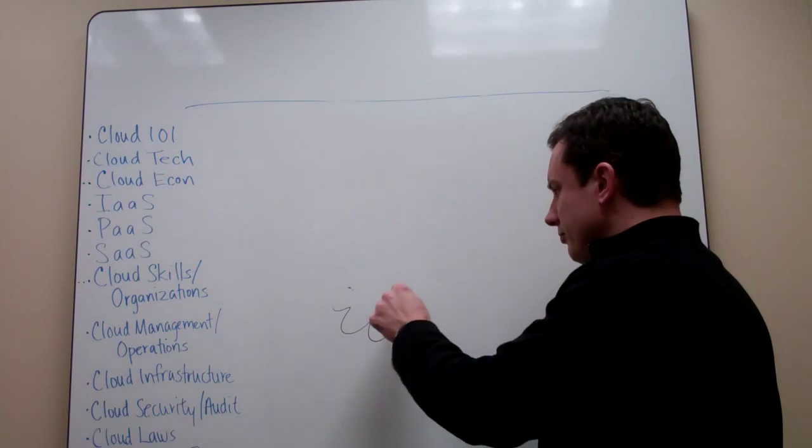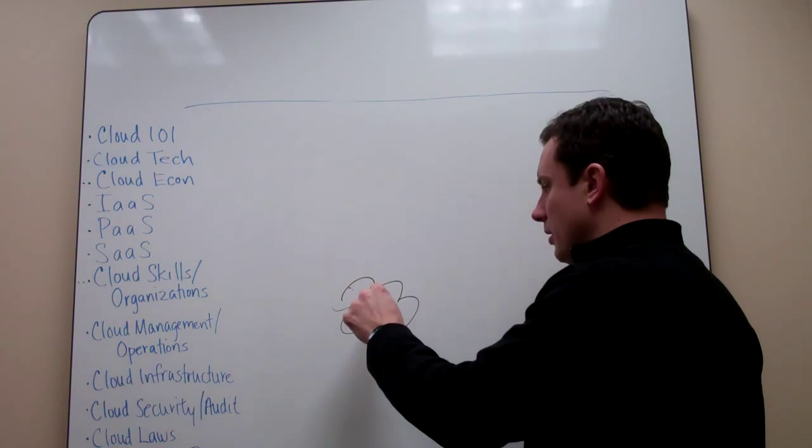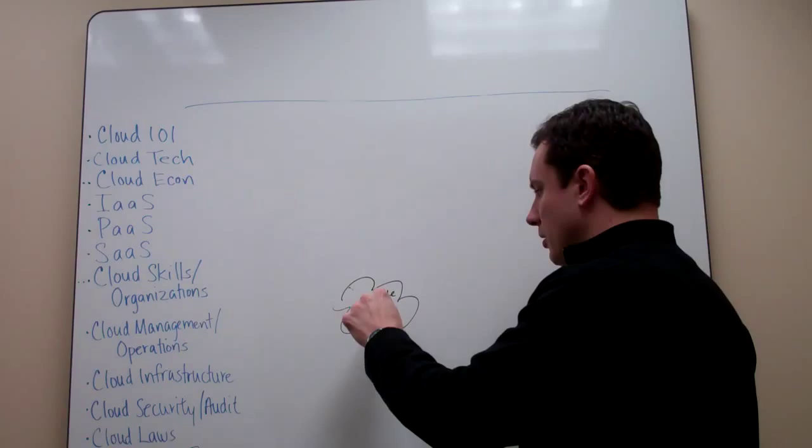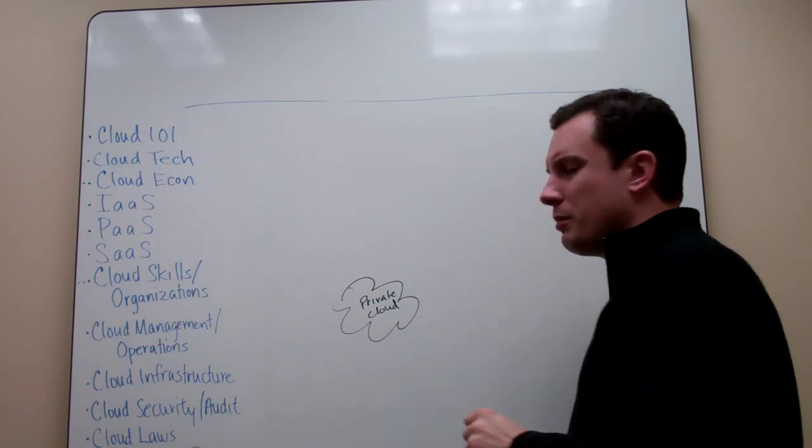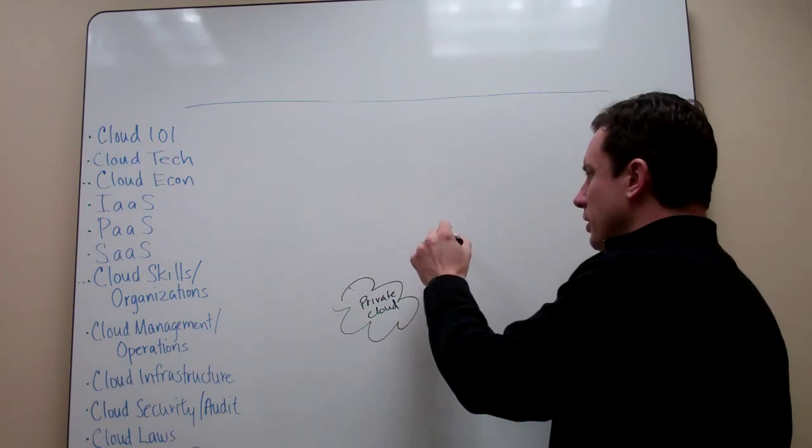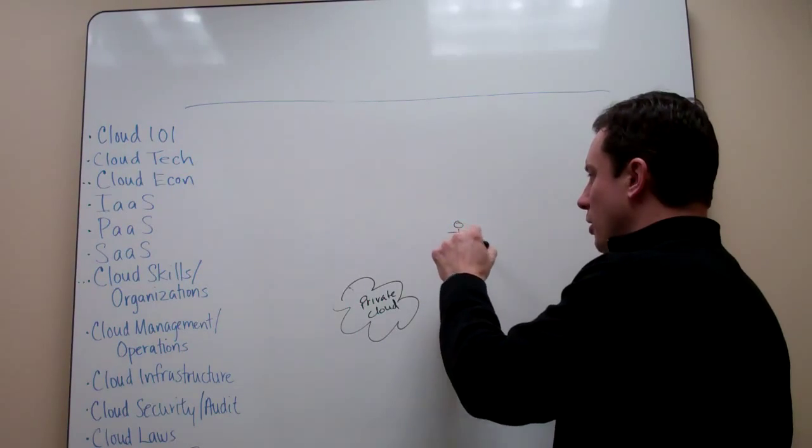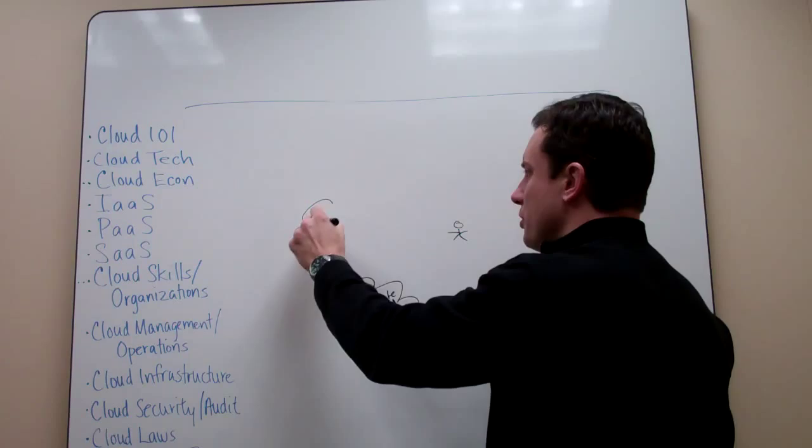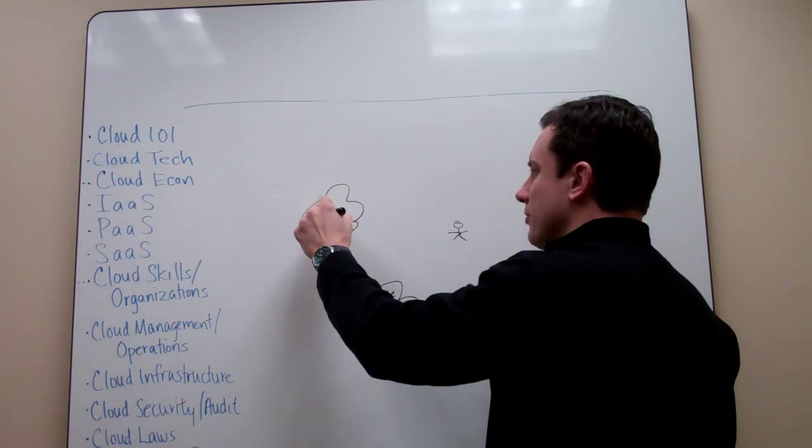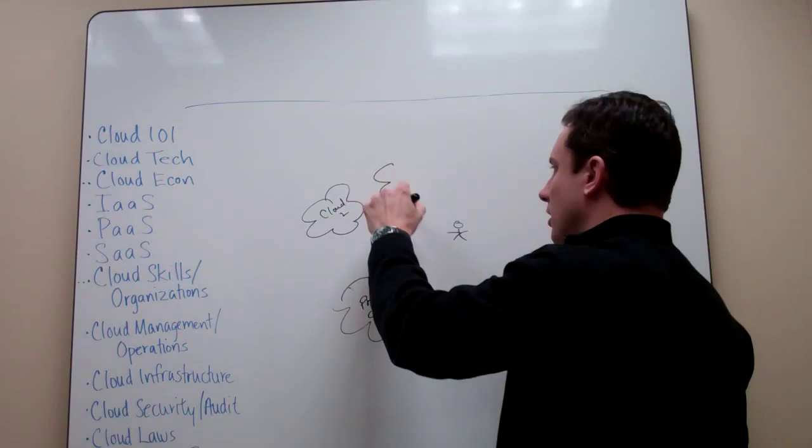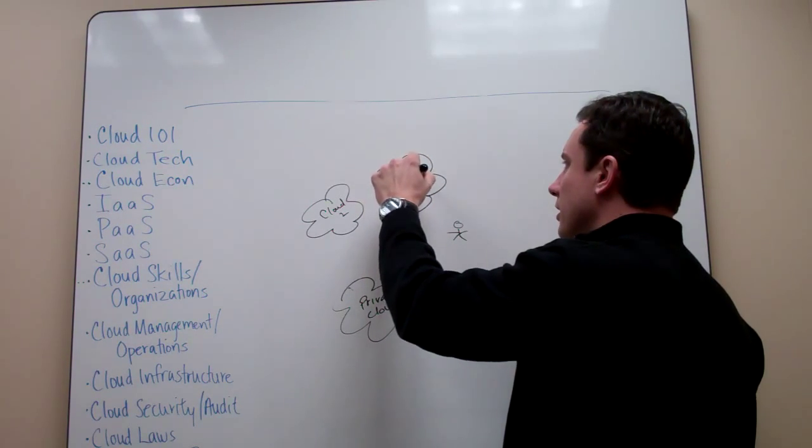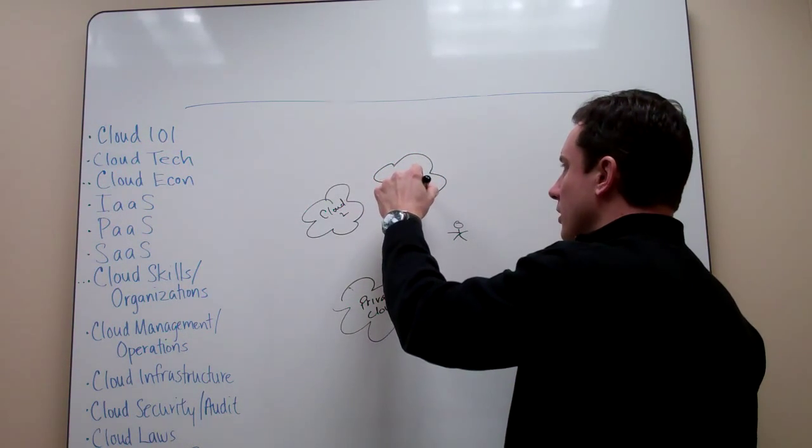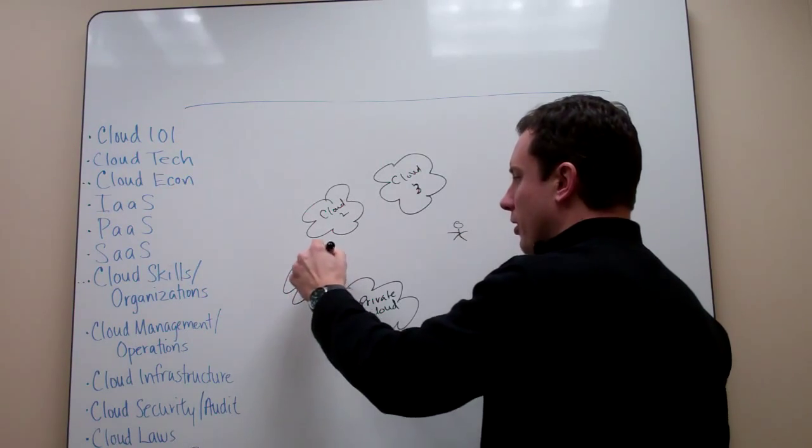Let's call that my private cloud, but I'm also going to want to have visibility. The CIO or IT organization is going to want the ability to manage resources across multiple clouds. So we'll call this cloud two, cloud three, and so forth, the fourth cloud.